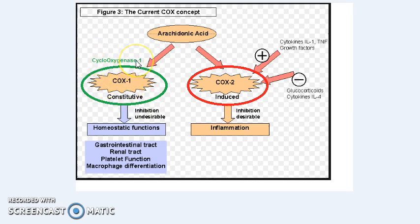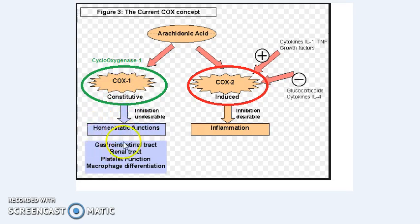COX stands for cyclooxygenase. To revise: there are phospholipids in your body, which are converted into arachidonic acid. Arachidonic acid, with the help of COX-1 — cyclooxygenase 1, a constitutive enzyme — is converted into prostaglandins that maintain homeostatic functions. This is happening in the gastrointestinal tract, in the renal tract, and also in the blood vessels.